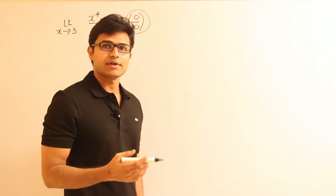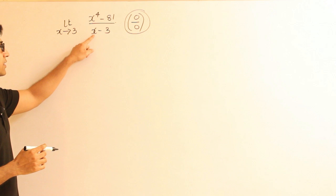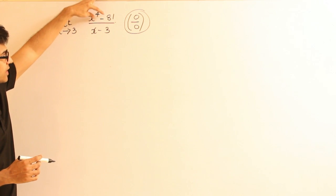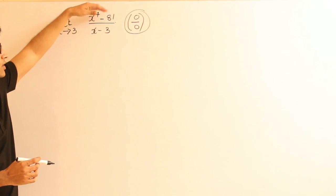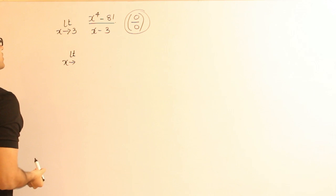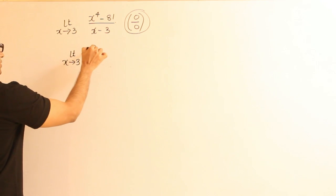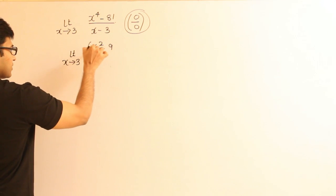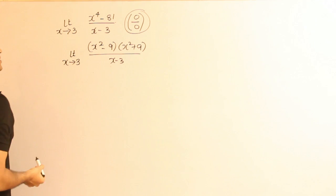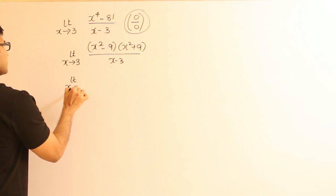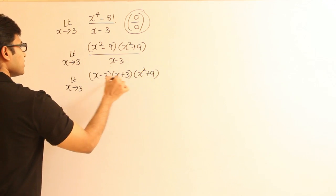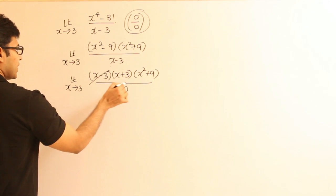So let's use the method called factorization. One simple clue: when you substitute 3 in the numerator, it gives 0, and in the denominator it also gives 0. That means x minus 3 is a factor of both. It is clearly visible in the denominator, but not in the numerator. Using the formula a² minus b² equals (a minus b)(a plus b), we can write x⁴ minus 81 as (x² minus 9)(x² plus 9), and then x² minus 9 as (x minus 3)(x plus 3). So we get (x minus 3)(x plus 3)(x² plus 9) divided by (x minus 3). Now we can cancel out the (x minus 3) terms.